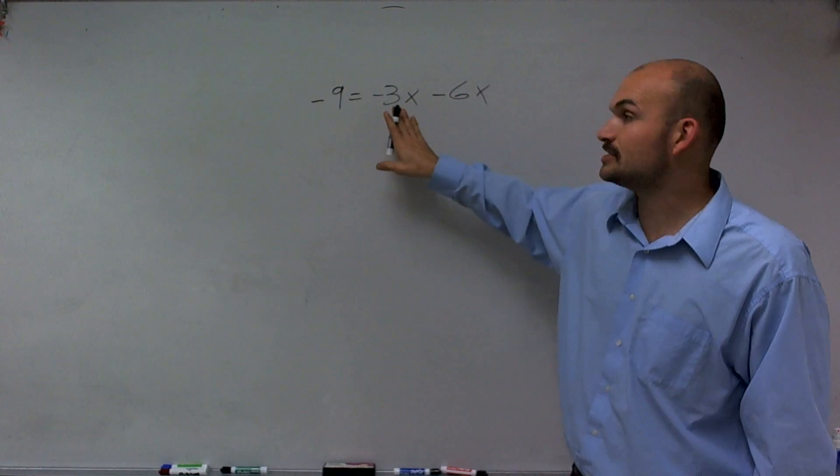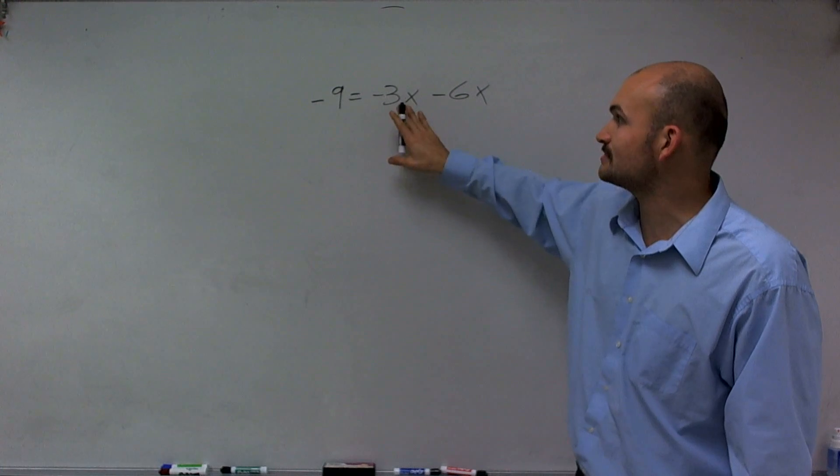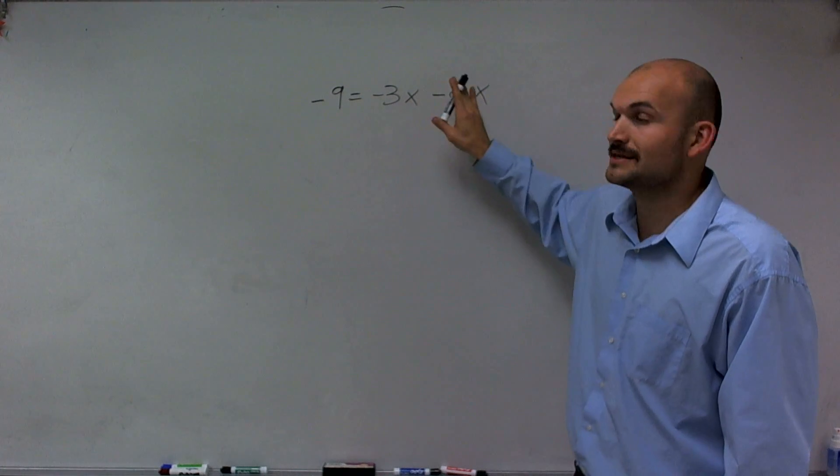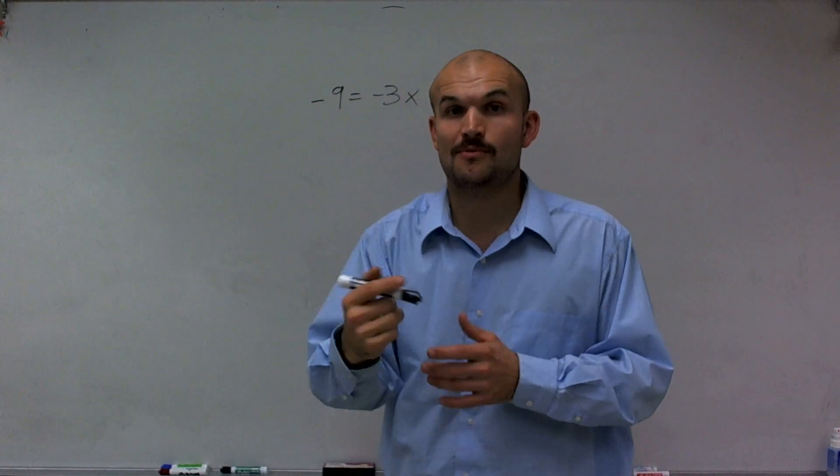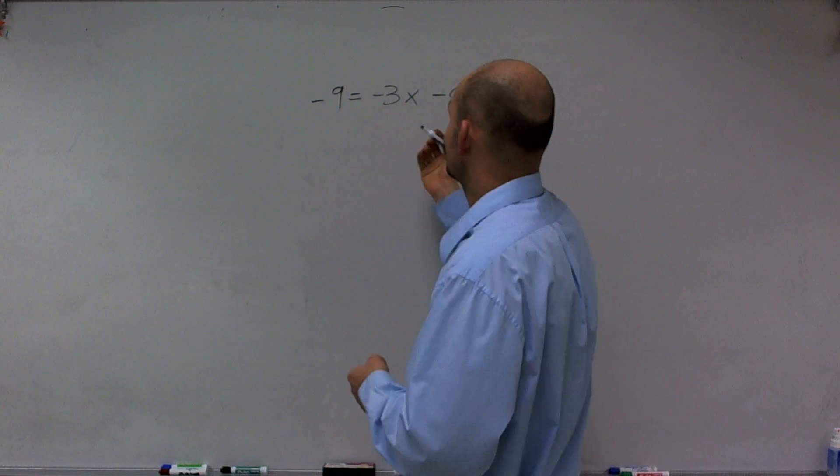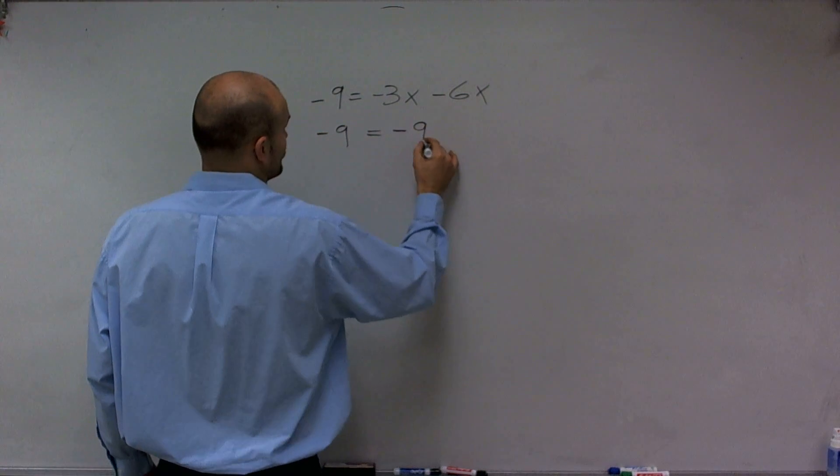I can simply combine them. Since they're like terms, I can combine the coefficients. So -3x minus 6x. If, let's say, you owe $3 and you borrow six more, you're now going to owe $9. So therefore, I can say -9 = -9x.